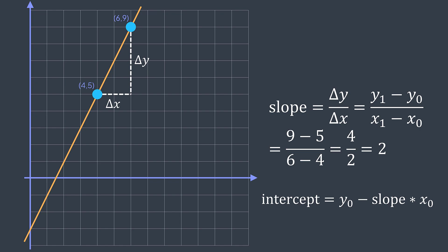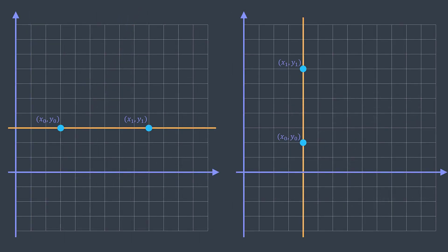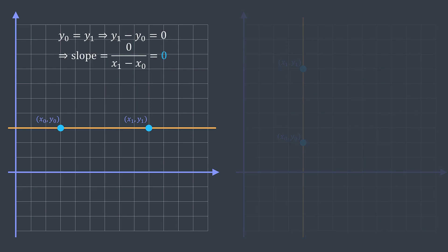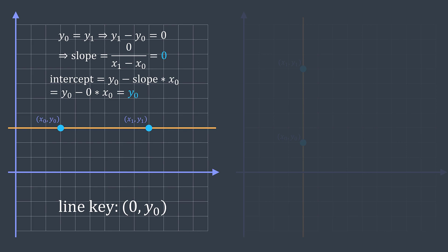We now know how to calculate the slope and the intercept, but we have two edge cases: when the line is horizontal and when the line is vertical. The line is horizontal when Y0 equals Y1. In that case, the Y doesn't change, so the slope is 0, and the intercept equals Y0. So the key is (0, Y0).